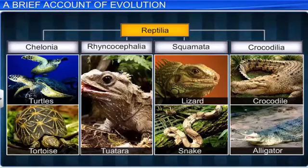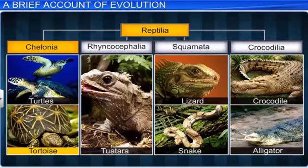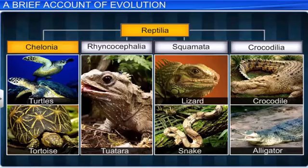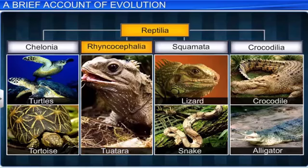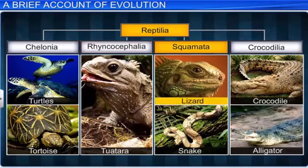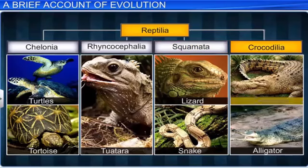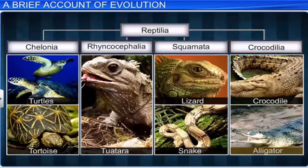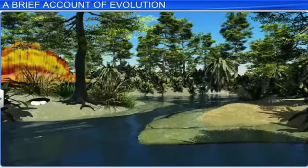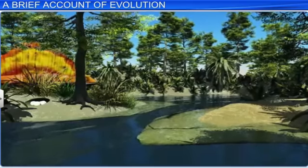Today, there are four orders of class Reptilia. The first order is Chelonia, which includes turtles and tortoise. The second order, Rhynchocephalia, includes tuatara. The third order, Squamata, includes lizards and snakes. While the fourth order, Crocodilia, includes crocodiles and alligators. Meanwhile, the plants that existed during the Permian age were ferns.